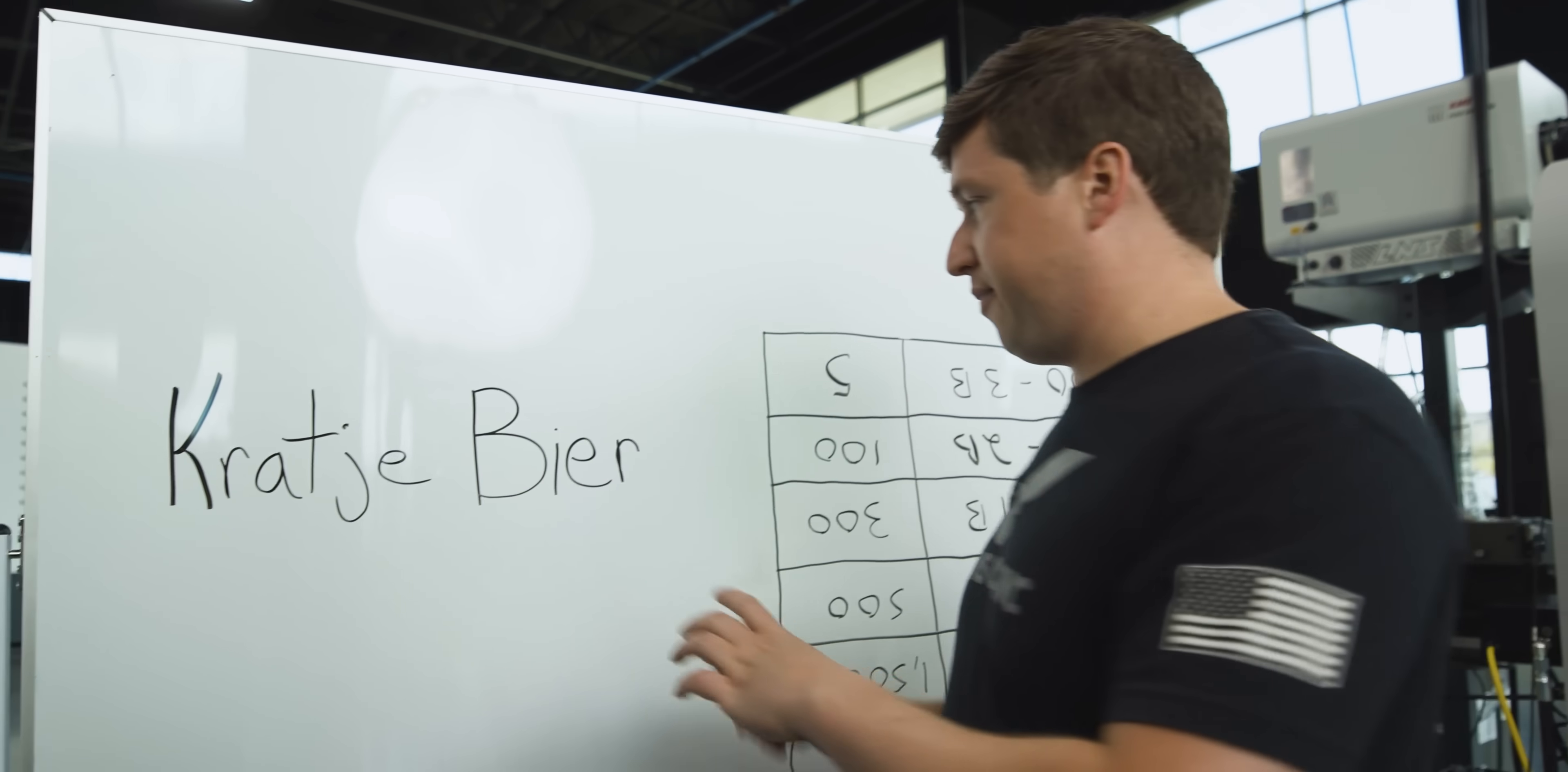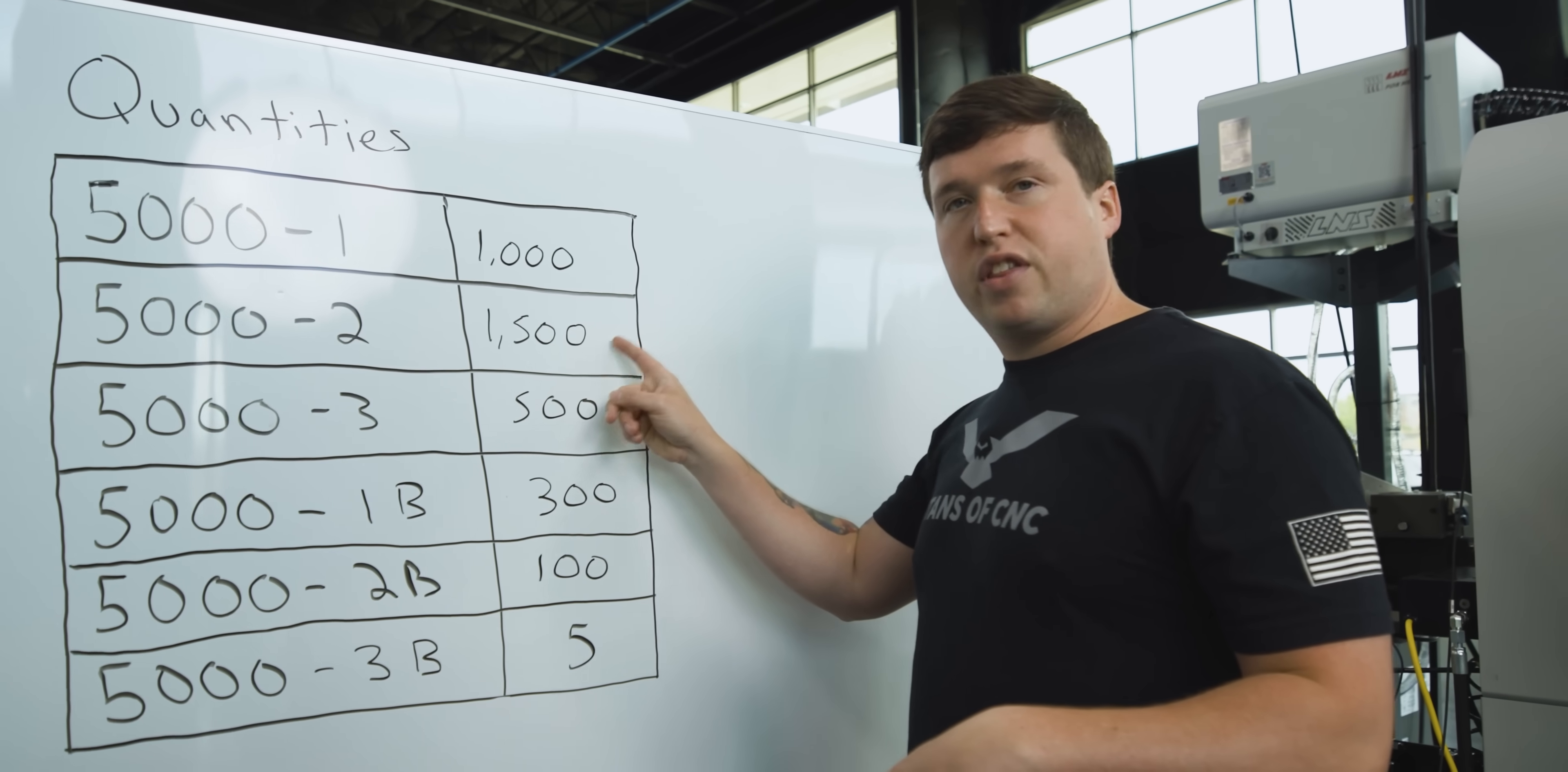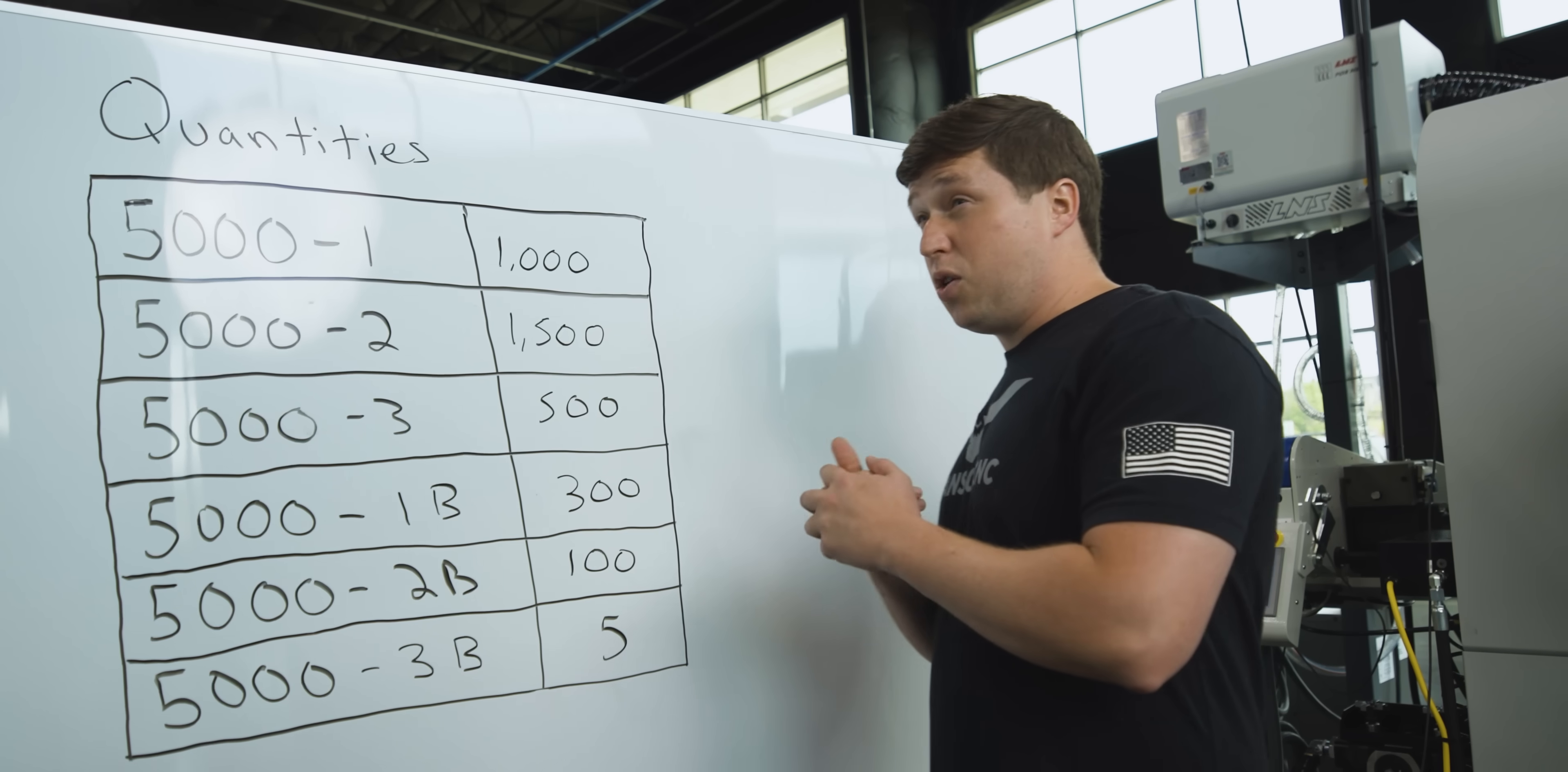So anyways, let's get back into this. These are the different part variables your customer's gonna have you quote. He's gonna say I want a thousand of the dash one, 1500 of the dash two. You're gonna write a program for the dash one and run those thousand pieces, and in this program you're gonna slightly tweak it. Then you're gonna copy and paste that program for this, and something's gonna happen, maybe during this, and you're gonna make changes to this. Well now your first program doesn't have all the updates you've made unless you can remember everything and go back and change everything and keep it all updated. It's a super big pain. You're gonna copy and paste this program and edit it for every single length and every single option, and then you're gonna get down to here where he only wants five of a part. You're really gonna write a program for five parts on a Swiss machine? That is awful.